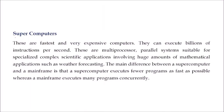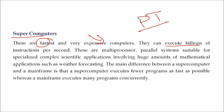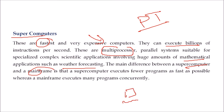Finally, supercomputers. These are the fastest and very expensive computers. They can execute billions of instructions, and their execution speed is computed in petaflops. The fastest supercomputer — the Chinese one — is around 57 to 65 petabytes in capacity. These are multi-processor parallel systems. Thousands of multi-processors work together and they are specialized for complex scientific applications involving huge amounts of mathematical computation — for example, weather forecasting. The main difference between a supercomputer and a mainframe is that a supercomputer executes fewer programs as fast as possible, while a mainframe executes many programs concurrently.